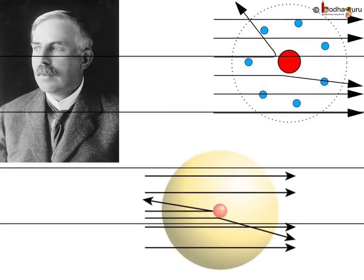Some of the alpha particles were deflected by the foil by small angles, which indicates that the positive charge of the atom occupies very little space. A very small fraction of alpha particles were deflected by 180 degrees, which indicated that the mass of the atom is concentrated in a very small space.